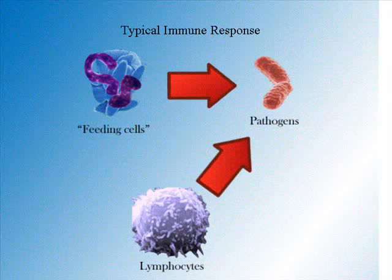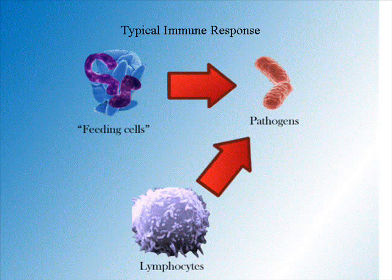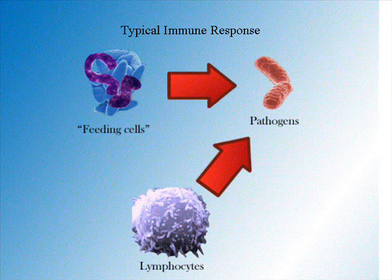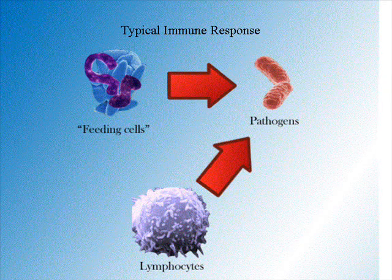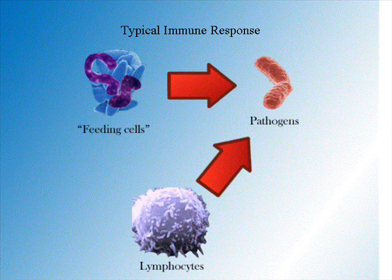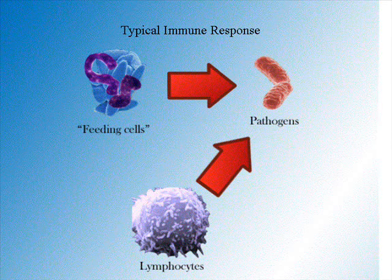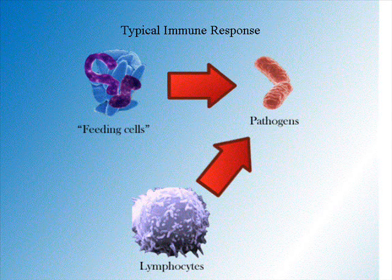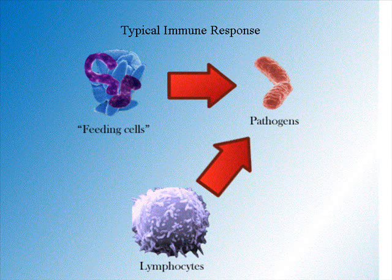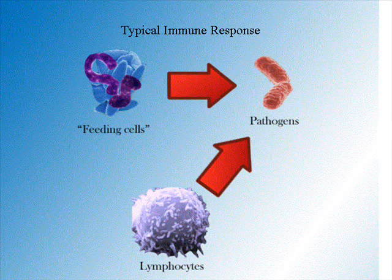When a foreign microorganism invades the body, the body first sends feeding cells such as neutrophils and macrophages to react with any means possible to remove the pathogen. Some methods of doing this are causing inflammation, signaling the threat to the other cells, and causing cells to migrate to the affected area.